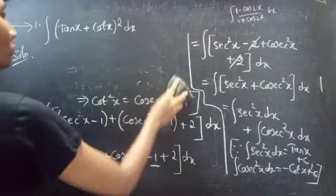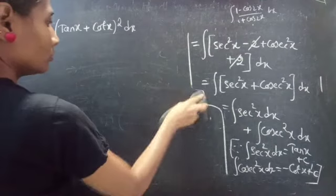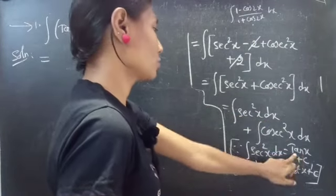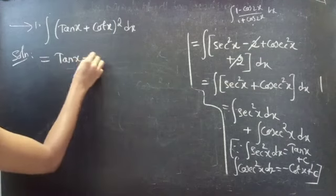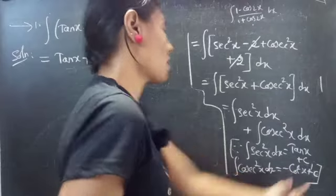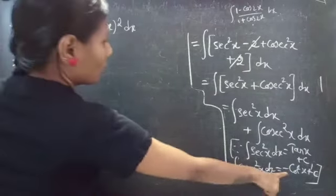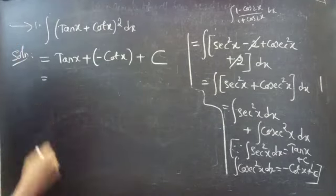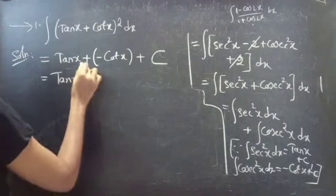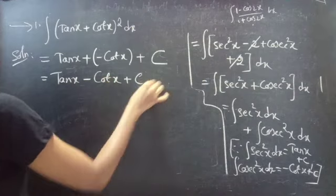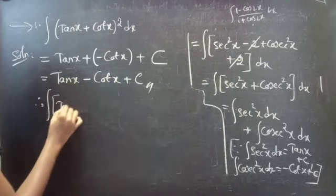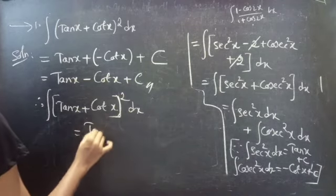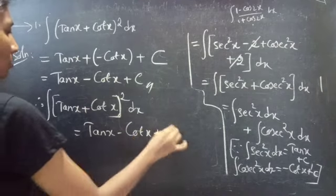Since the integral of sec²x dx = tan x, and the integral of csc²x dx = -cot x, we combine them with one constant of integration. Therefore, the integral of (tan x + cot x)² dx equals tan x - cot x + C. This completes the first problem.